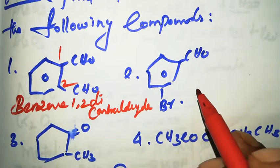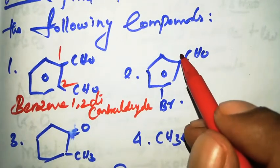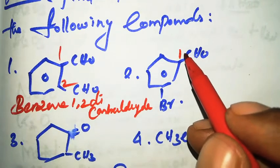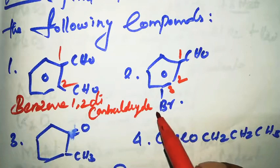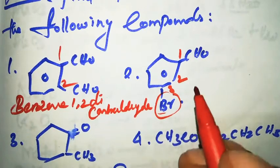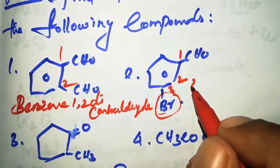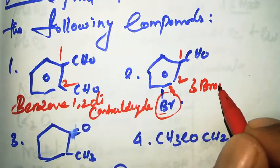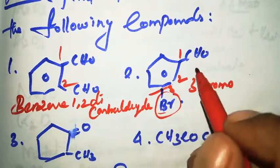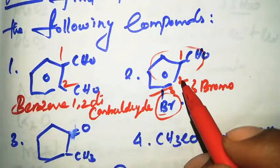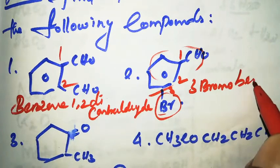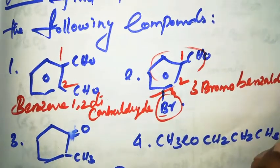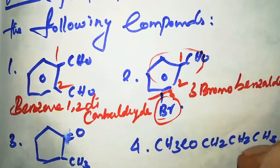The second compound has a functional group at position one, and at the third position there is a bromine substituent. So the IUPAC name is 3-bromobenzaldehyde.